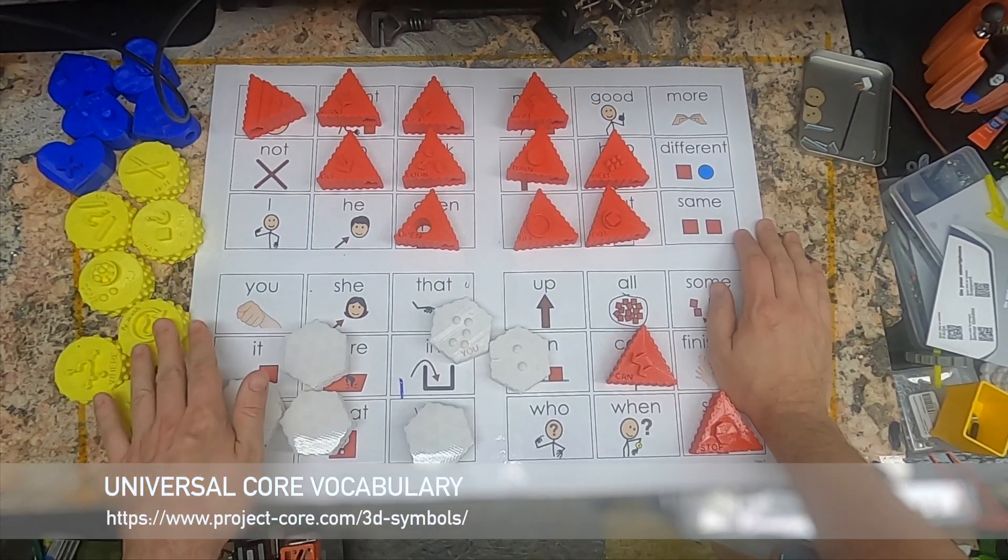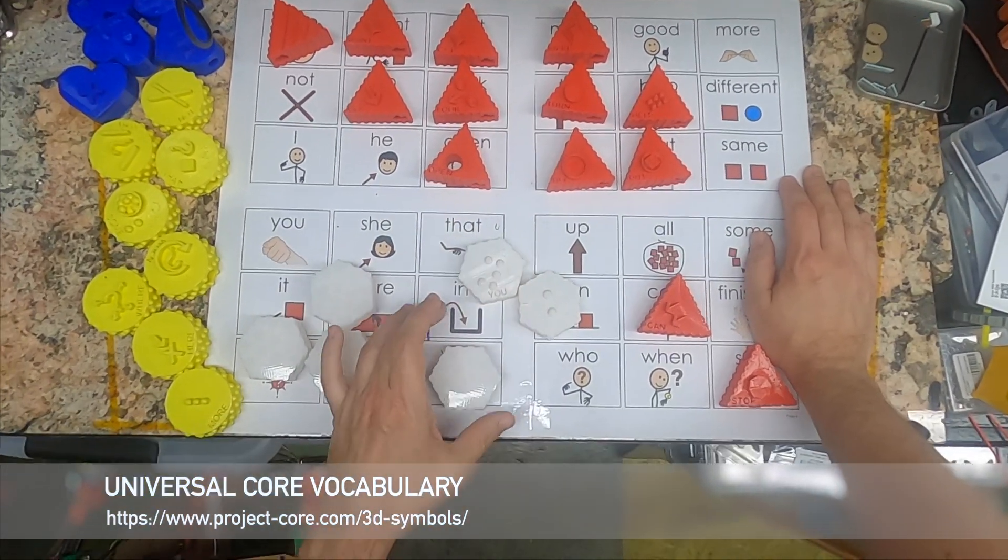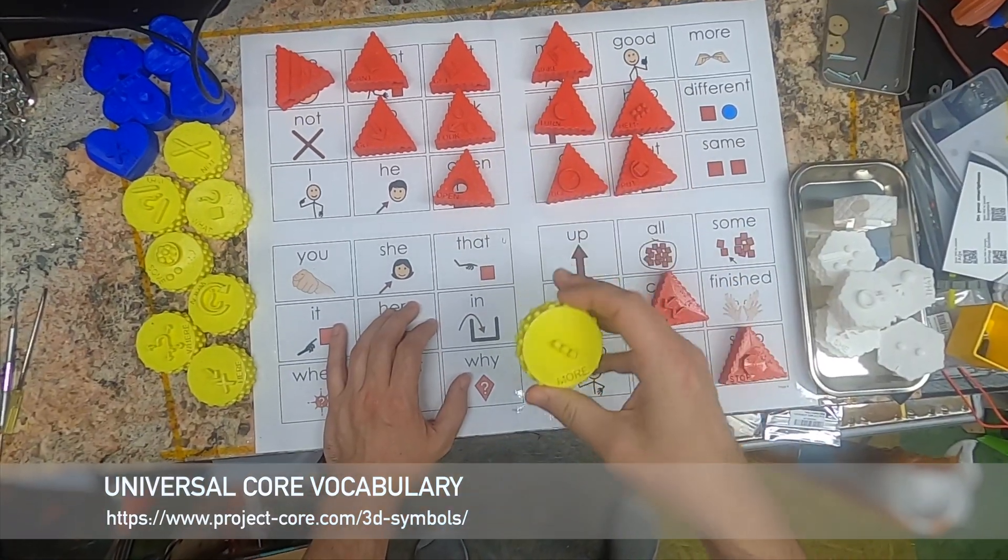Today I want to talk about these colorful, textured, and labeled word shapes that are part of the Universal Core Vocabulary's 3D symbol format. Link to the project below, of course.